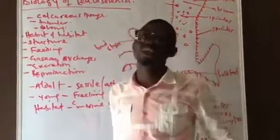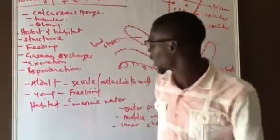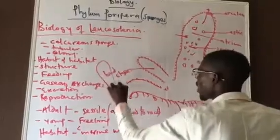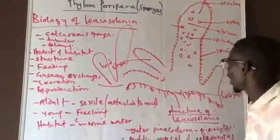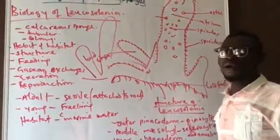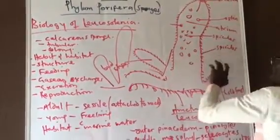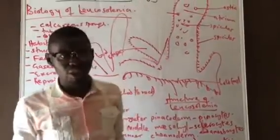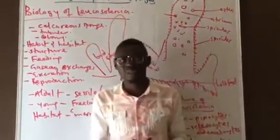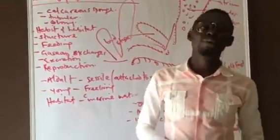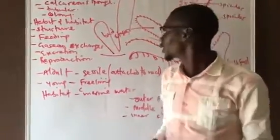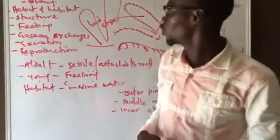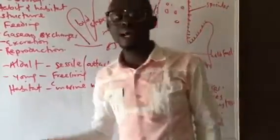They carry out both asexual and sexual reproduction. In asexual reproduction, a bud forms on the body; this part, now at a young stage, will break off from the whole and develop into another individual. Because they are colonial, one individual can bud off. For sexual reproduction, they are hermaphrodites, so one sponge has both male and female reproductive systems. By fusion of gametes, the male and female gametes are produced inside the body and fertilization occurs. The zygote develops into an embryo which leads to the production of a new larva. That is how they carry out reproduction.